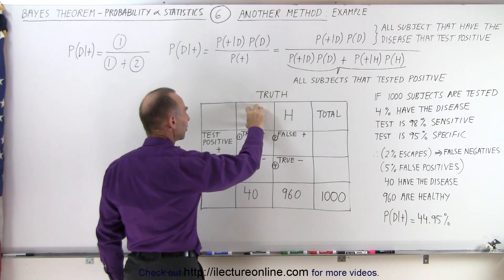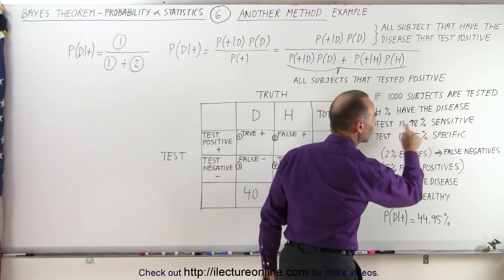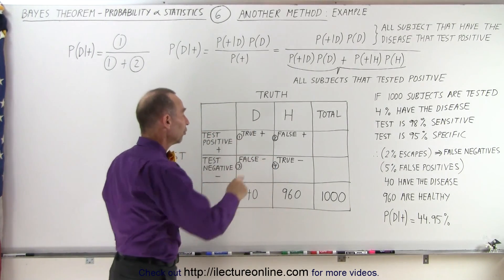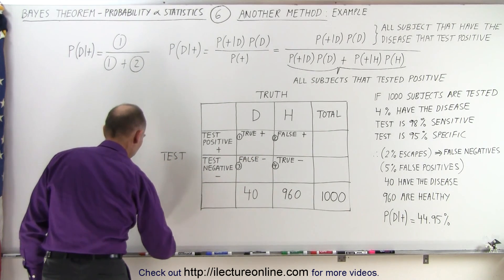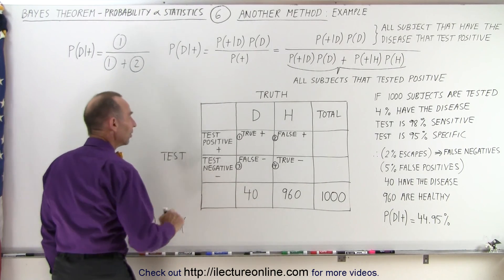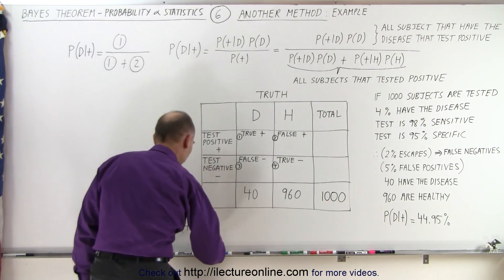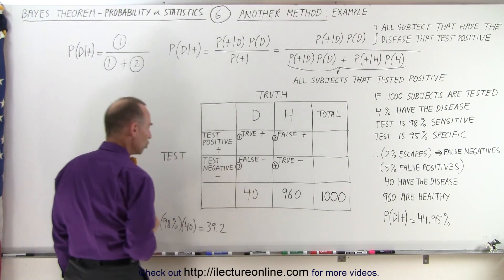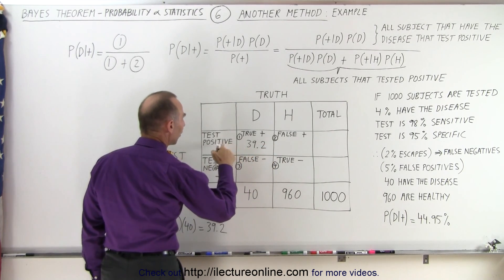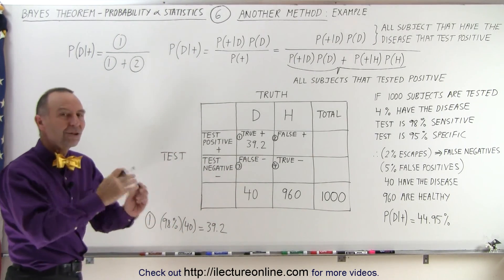This represents, of all the subjects tested that have the disease, the ones that test positive. We're told that the test is 98% sensitive, which means 98% of the ones that have the disease and are tested will test positive. So for box number one we take 98% multiplied by the 40 that have the disease — 40 times 98% equals 39.2. So 39.2 goes in here, meaning of the 40 that have the disease and are tested, 39.2 will test positive. Of course there's no such thing as 39.2 subjects, but that's the number we end up with.